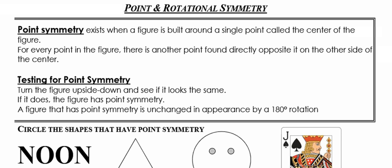So first of all, we're going to talk a little bit about point symmetry. The book definition of point symmetry says that it exists when a figure is built around a single point called the center of that figure, and for every point in the figure, there's going to be another point found directly opposite that point but on the other side of the center. The Miss McCann definition says a figure has point symmetry when it looks upside down exactly the same as it does right side up.